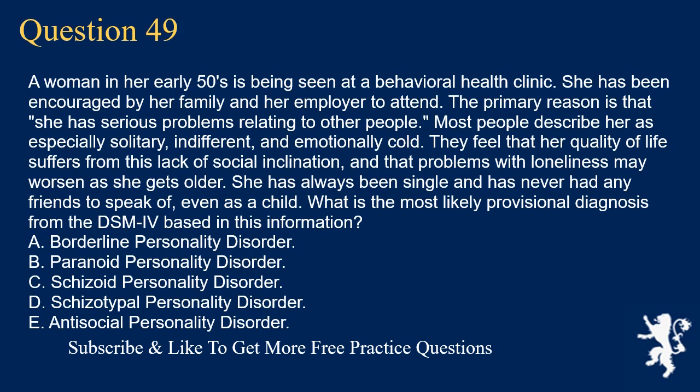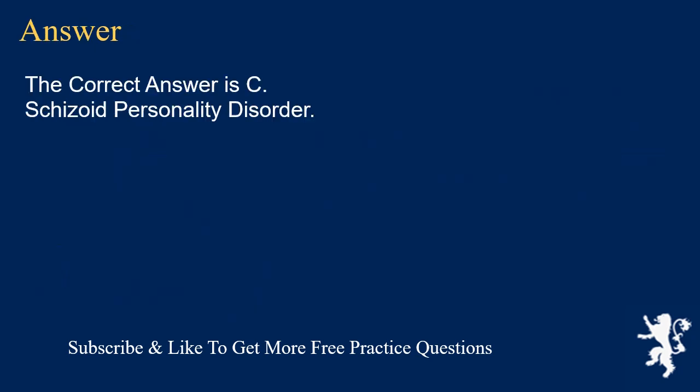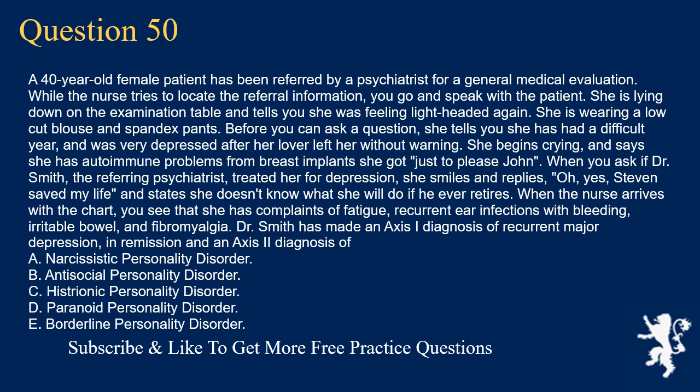Question 49. A woman in her early 50s is being seen at a behavioral health clinic. She has been encouraged by her family and her employer to attend. The primary reason is that she has serious problems relating to other people. Most people describe her as especially solitary, indifferent, and emotionally cold. They feel that her quality of life suffers from this lack of social inclination, and that problems with loneliness may worsen as she gets older. She has always been single and has never had any friends to speak of, even as a child. What is the most likely provisional diagnosis from the DSM-IV based on this information? A. Borderline Personality Disorder. B. Paranoid Personality Disorder. C. Schizoid Personality Disorder. D. Schizotypal Personality Disorder. E. Antisocial Personality Disorder. The correct answer is C. Schizoid Personality Disorder.